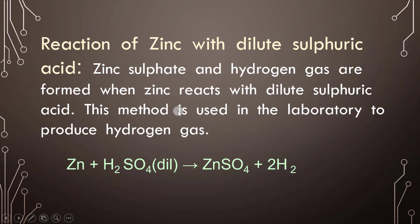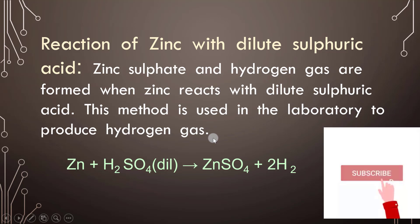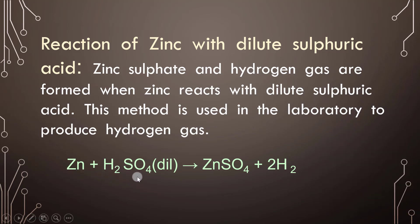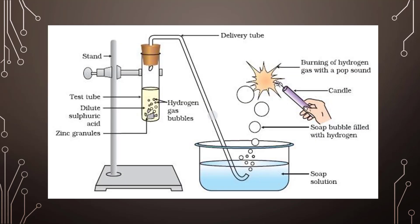This method is used in the laboratory to produce hydrogen gas. The formula is: Zn + H₂SO₄ (dilute) → ZnSO₄ + H₂. The lab setup uses a stand, test tubes, zinc granules, dilute sulfuric acid, and a delivery tube leading into a soap solution in a container.